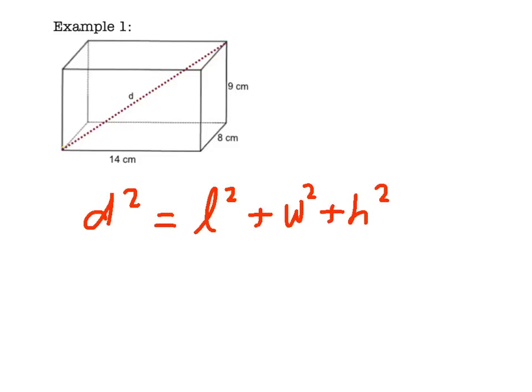Step 2, substitute the known values into your formula. We don't know D, so D is going to stay D squared. The length of our rectangular prism is 14 centimeters. So in place of L squared, we'll write 14 squared, plus the width squared, that's going to be 8 squared, plus the height squared, which is 9 squared.